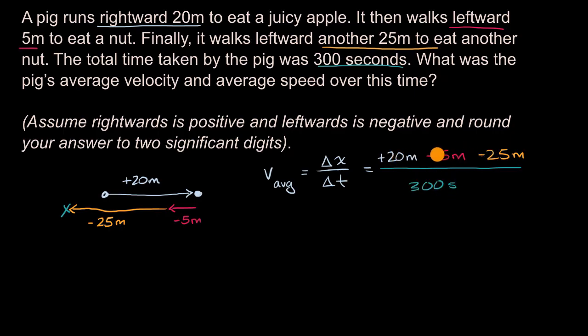So what is this numerator going to be? This is 20 minus 30. So that's going to be equal to negative 10. So this is equal to negative 10 meters over 300 seconds.